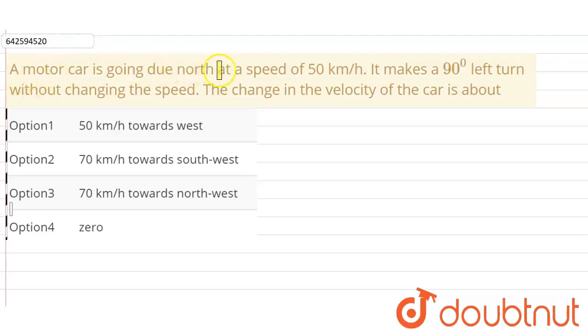So our question is: a motor car is going due north at a speed of 50 kilometer per hour. It makes a 90 degree left turn without changing the speed. The change in the velocity of the car is about... Okay, so in the given question we have been given that a car is moving due north with a velocity of 50 kilometer per hour.